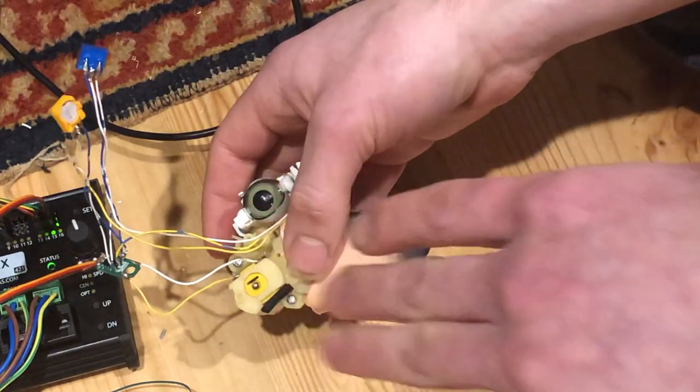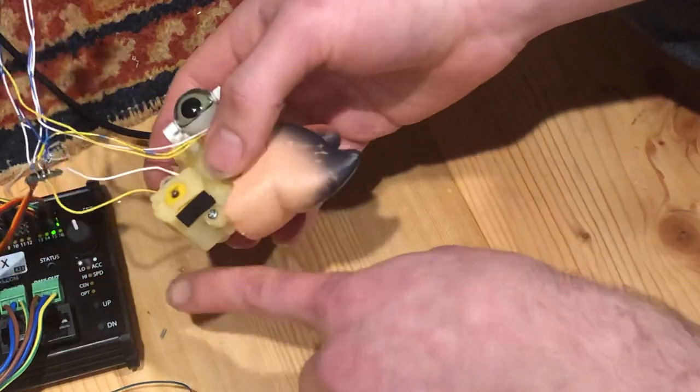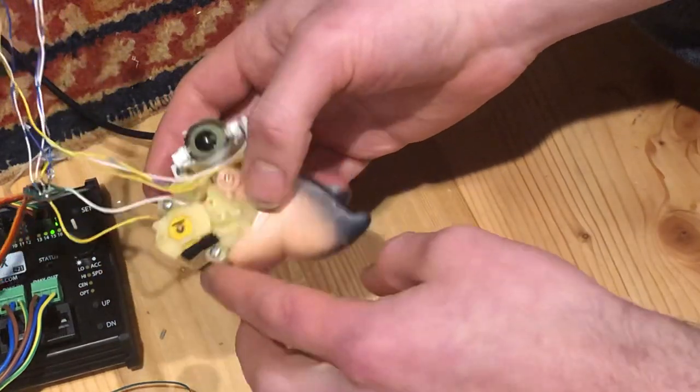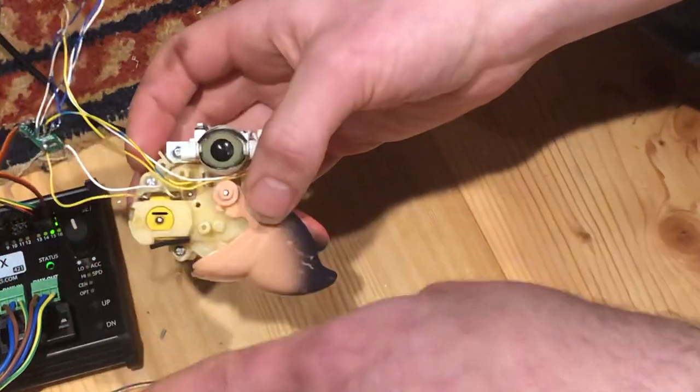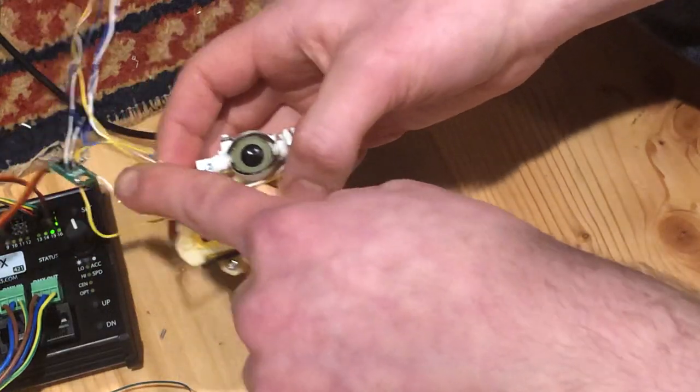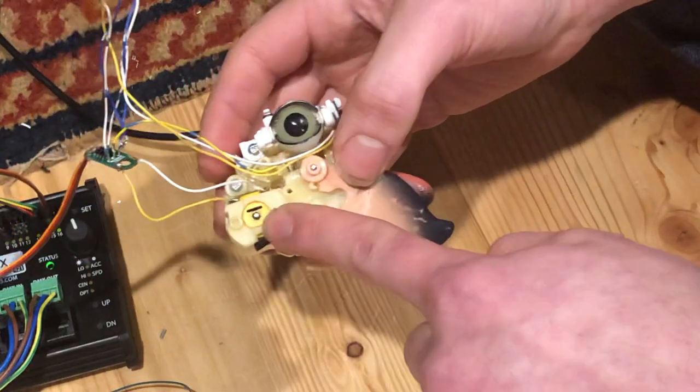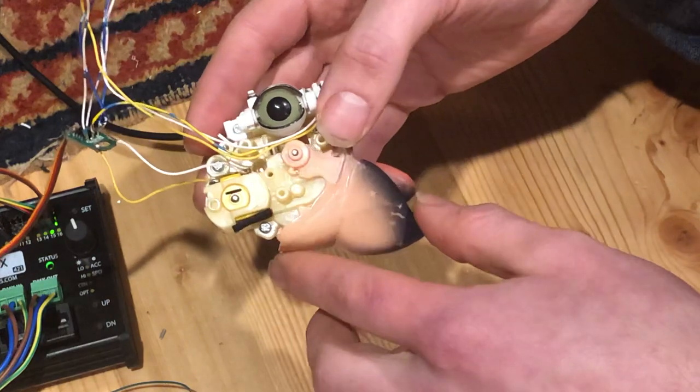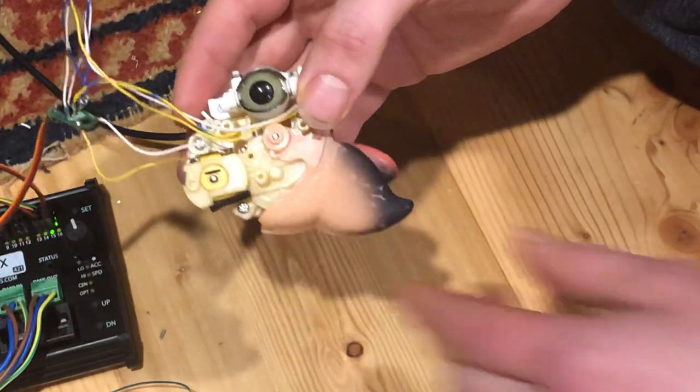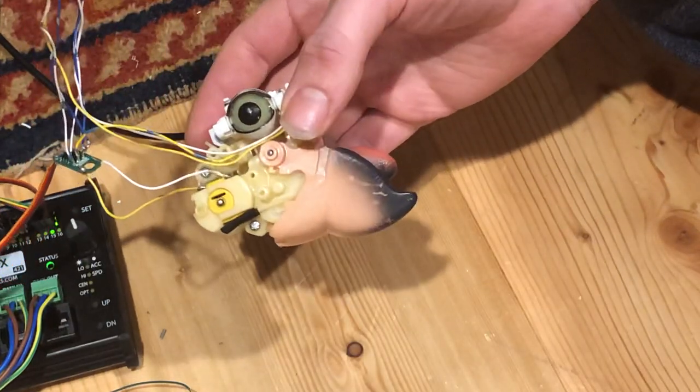Then when it gets a signal lower than 128 over DMX, it tells the servo that it needs to go lower. The servo then is outputting voltage to the Squawkers McCaw motor, telling the mouth to go low.